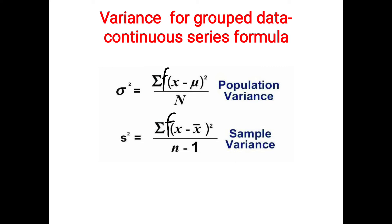Let's see the formula. We have different formulas for sample variance and population variance. First we will see for population variance. Population variance is represented as sigma square, which is equal to summation of f into (x minus mu) whole square, divided by capital N. Capital N here is nothing but sigma f, that is the summation of your frequencies.